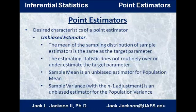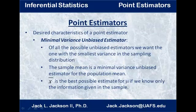Those are two examples of unbiased estimators — probably the two main ones we'll be dealing with in this course. Next, what we'd really like is a minimal variance unbiased estimator. Of all the possible unbiased estimators, we want the one with the smallest variance in the sampling distribution. It turns out the sample mean is a minimal variance unbiased estimator for the population mean. So x-bar is the best possible estimate for mu if we only know the information given in the sample. The same is true for s², the sample variance — it's the best estimator for σ², the population variance.